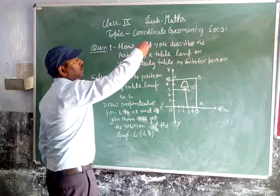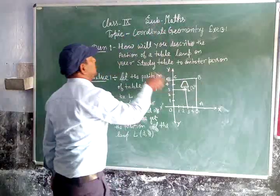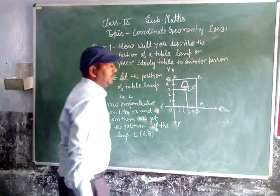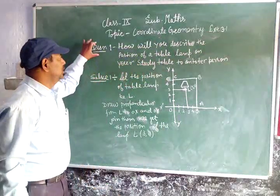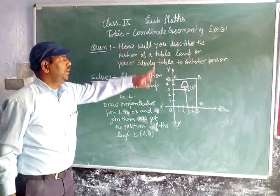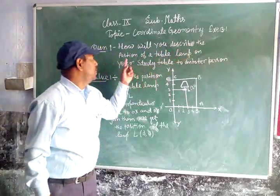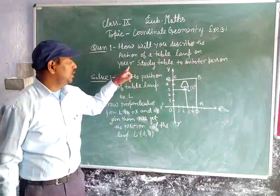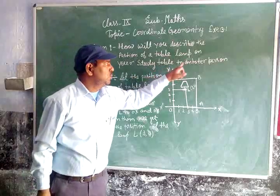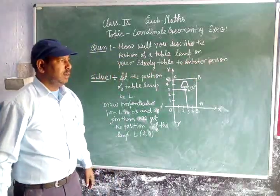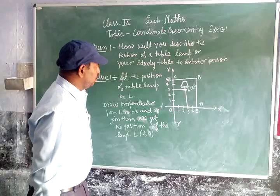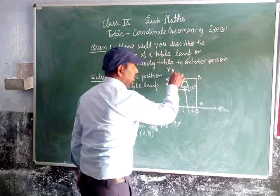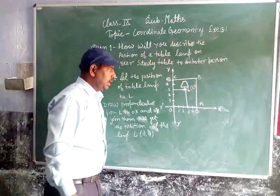According to me, Exercise 3.1, Question Number 1: How will you describe the position of a table lamp from your study table to another person? Let's suppose you have a table — let A, B, C be a table and the position of the lamp be a point.